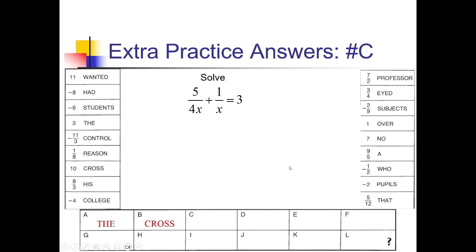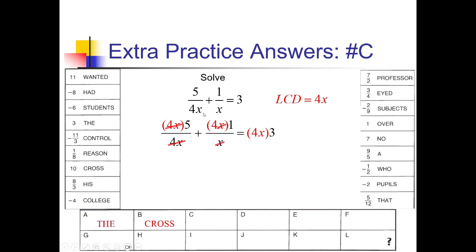On problem C, the LCD is quickly found: a 4 and an x — so 4x covers both denominators. Multiplying everything by 4x: the 4 and x both cancel in the first fraction, just the x's cancel in the second, and we get 5 plus 4 equals 12x. So 9 equals 12x, and dividing both sides by 12 gives 9/12, which reduces to 3/4. That matches up with 'i'd,' so we put 'i'd' in spot C.